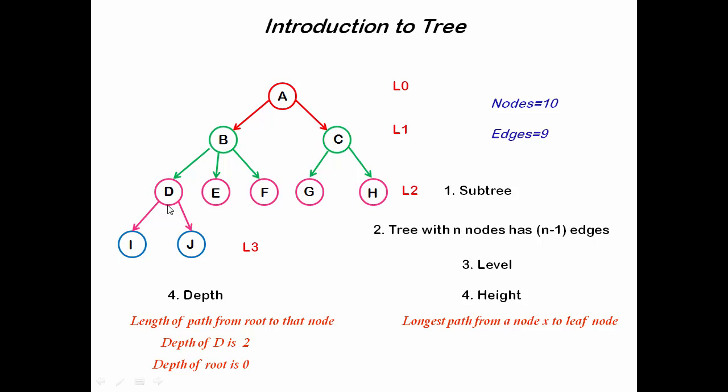Next one is height. Height of a node is defined as longest path from a node X to a leaf node. If we consider the node D, then you can see here there is only one path or one edge from D to leaf node. So height of D is 1.